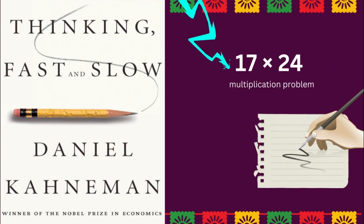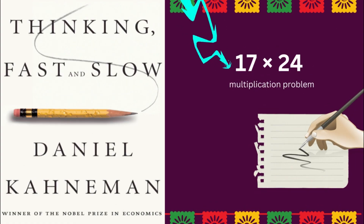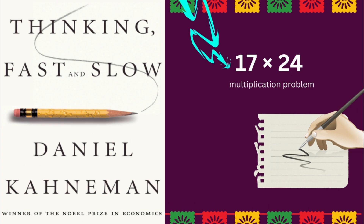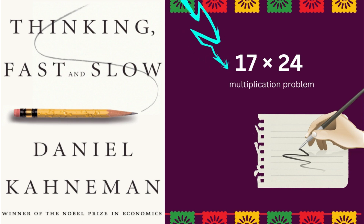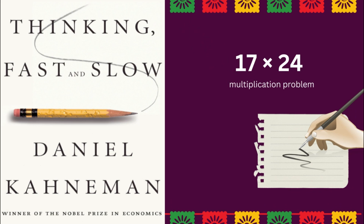Now look at the following problem: 17 by 24. You knew immediately that this is a multiplication problem, and probably knew that you could solve it with paper and pencil, if not without. You also had some vague intuitive knowledge of the range of possible results. You would be quick to recognize that both 12,609 and 123 are implausible.